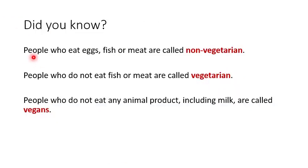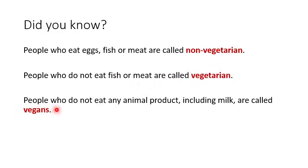People who eat eggs, fish, or meat are called non-vegetarian. People who do not eat fish or meat are called vegetarian. People who do not eat any animal product including milk are called vegans.